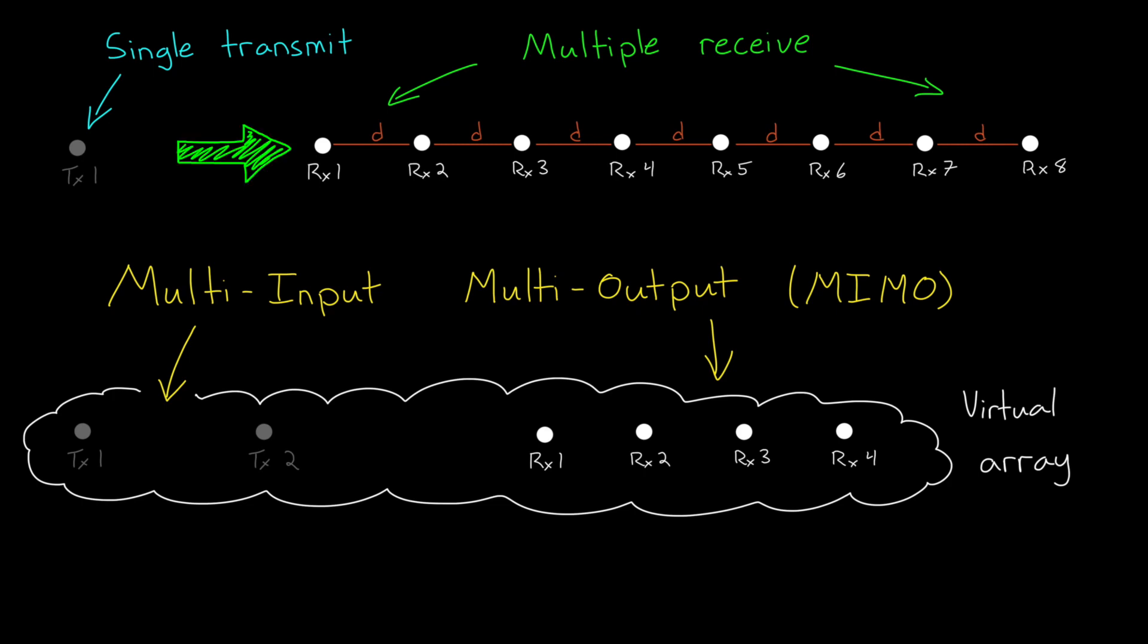Instead of, say, having 8 receive antennas and 1 transmit, we could have 2 transmit antennas and 4 receive, and form a virtual array that is equivalent. If the arrangement of these antennas is done just right, this system performs the exact same with 6 antennas as a system does with 9. And this savings increases with larger arrays. 2 transmit and 8 receive antennas can perform with 10 the exact same as one with 16 receive antennas and 1 transmit. So about half as many, but you get the benefit of those really narrow peaks in the FFT that improves resolution.